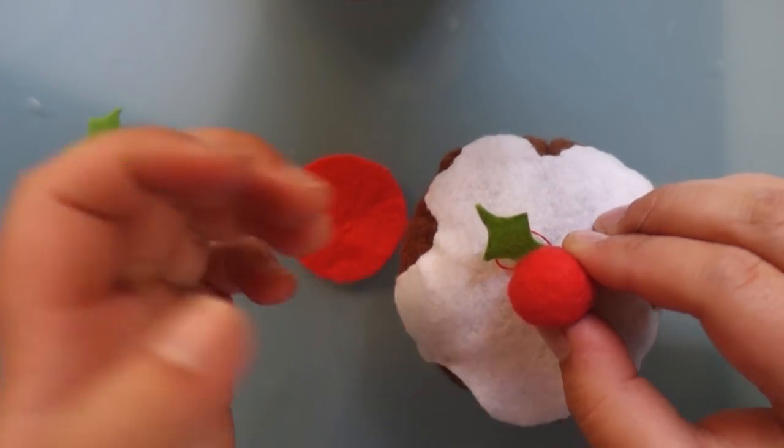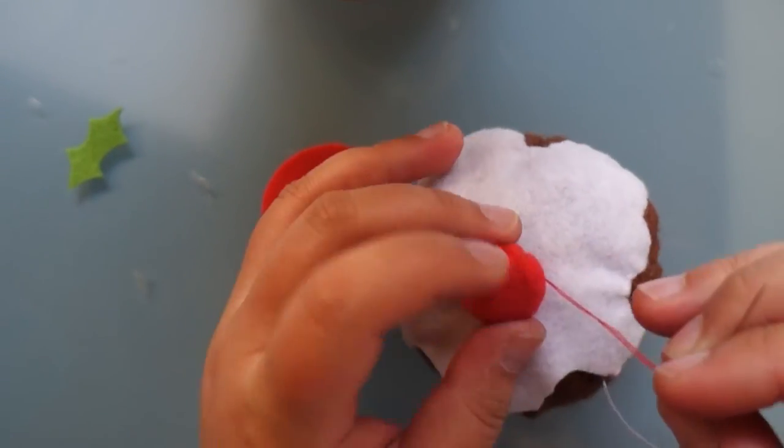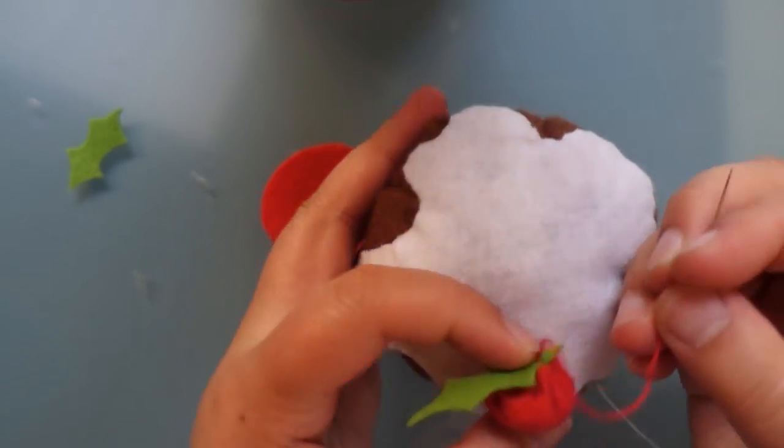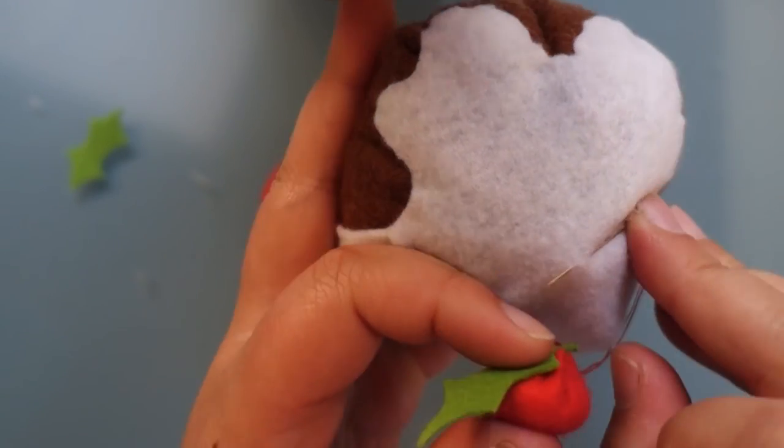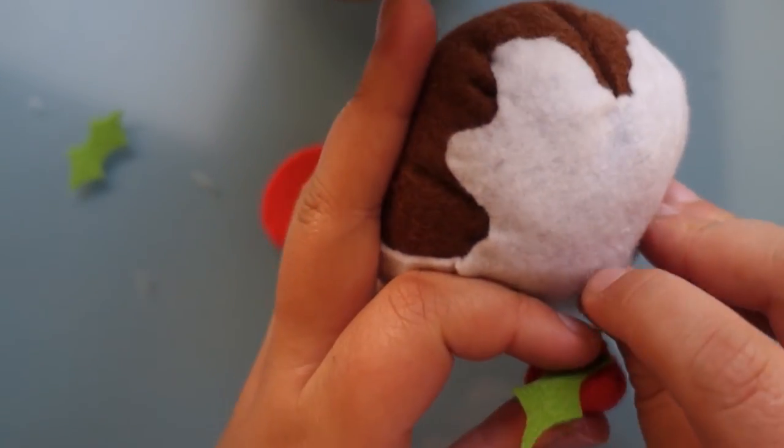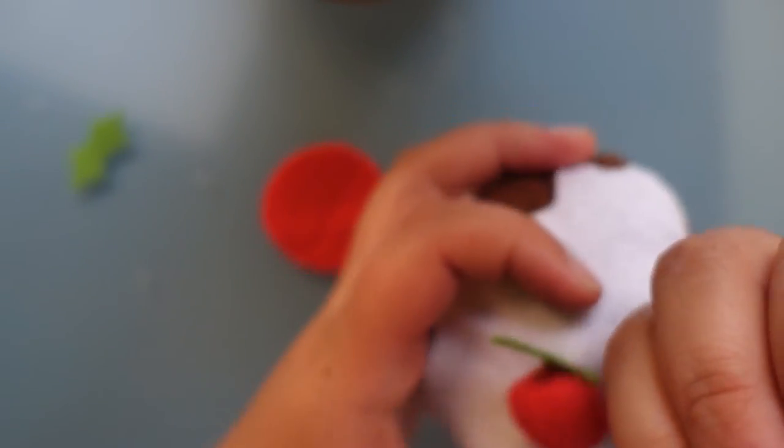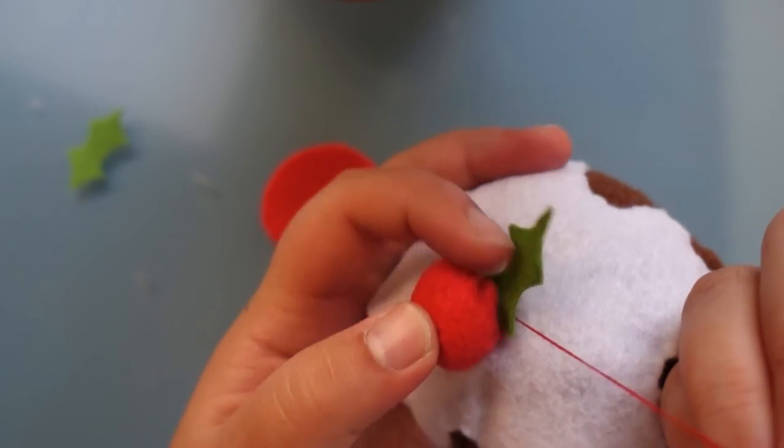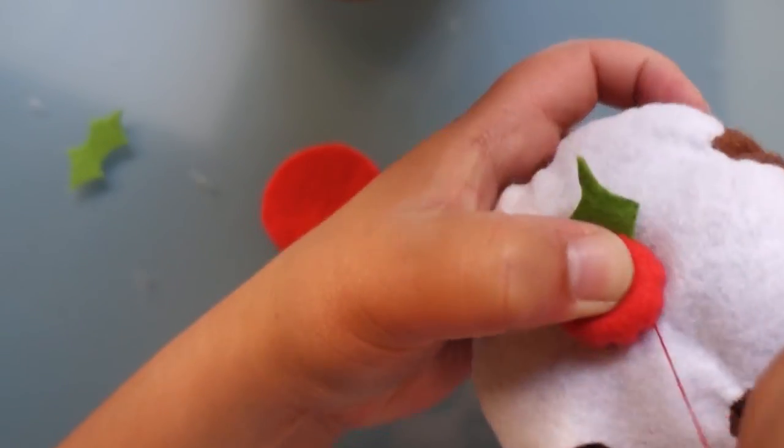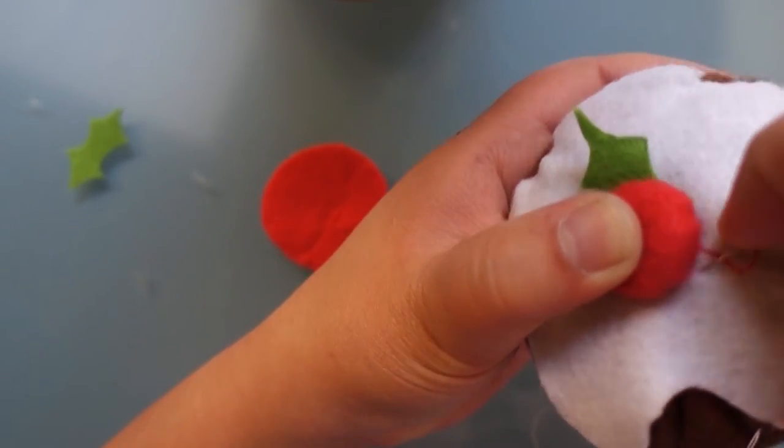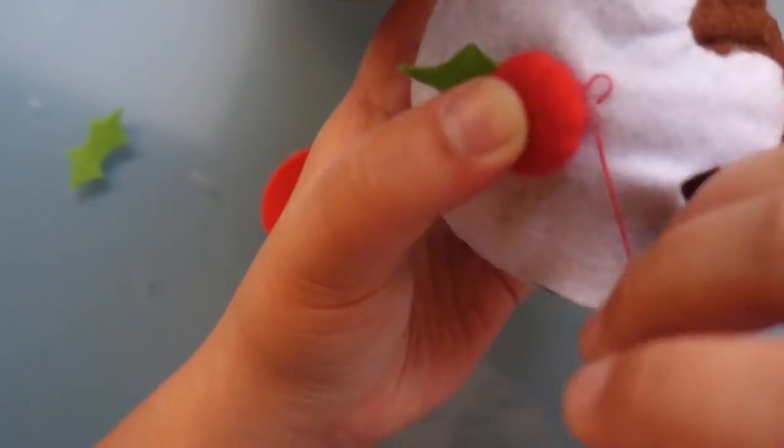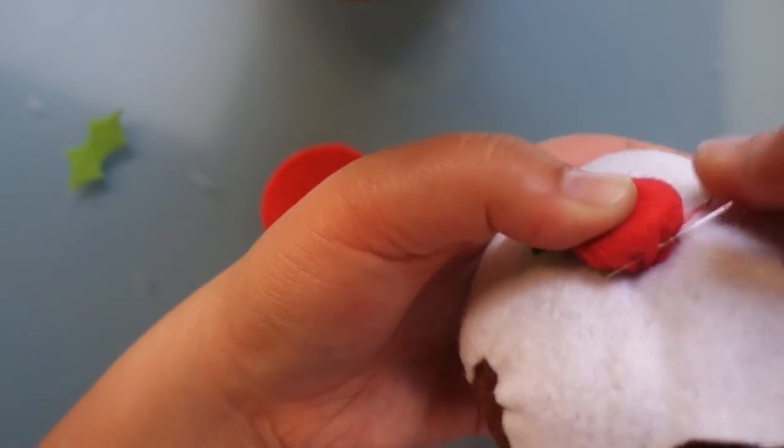Then we want to decide where we want to place it on top of our pudding and then taking our needle and thread, we want to take a nick of white felt. Then pull our thread tight and you'll see that the berry is placed on top but it's a little bit wobbly so we want to attach it to the icing in about two or three other places as well to make it nice and secure.